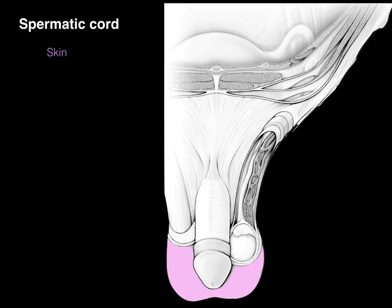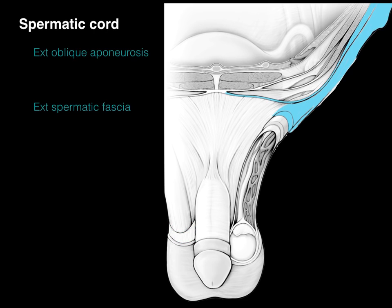The layers are: first, the skin. Within the sublayer of the skin is the dartos muscle and fascia — a smooth muscle that helps wrinkle the scrotal sac to allow heat to radiate out. In blue, the external oblique muscle and aponeurosis becomes the external spermatic fascia, the outermost layer surrounding the testis. The inguinal ligament is literally just the inferior border of the external oblique aponeurosis that attaches to the anterior superior iliac spine and courses down to the pubic bone.